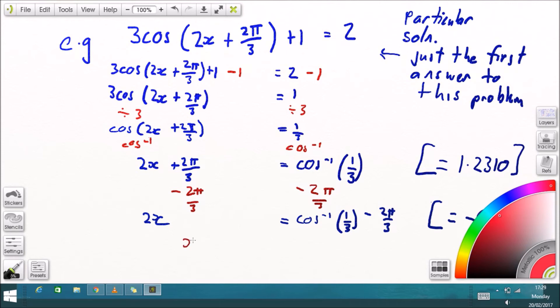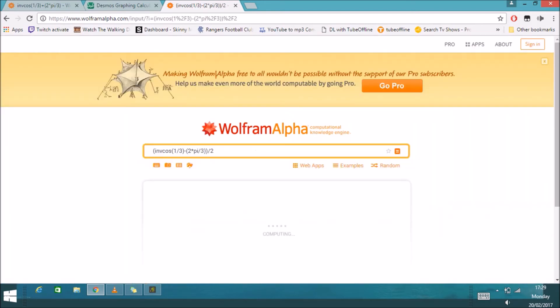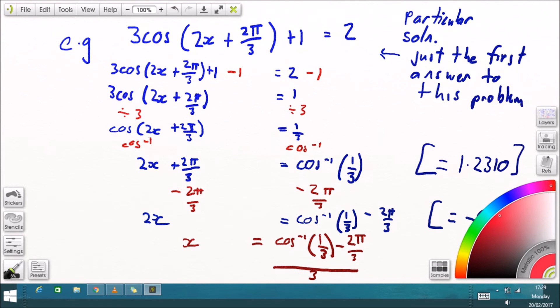And lastly, to get x by itself, we just divide both sides by 2, and that's this whole thing here. I'm using a website called Wolfram Alpha to work this out, so you type in something like that. Inf cos means inverse cos, you'll use shift cos on your calculator, and it gives me the answer just there.